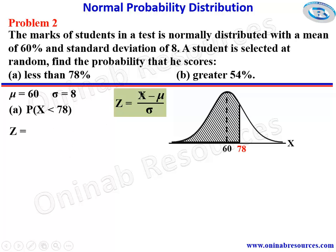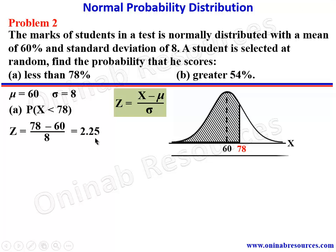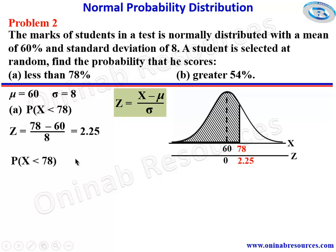Before we proceed, we convert this to a z-score using the formula z = (x − mean) / standard deviation. So z = (78 − 60) / 8 = 2.25. We now represent 2.25 on the z-axis, where the mean is always 0 along the symmetrical axis, placing 2.25 to the right. Therefore, P(X < 78) = P(Z < 2.25).